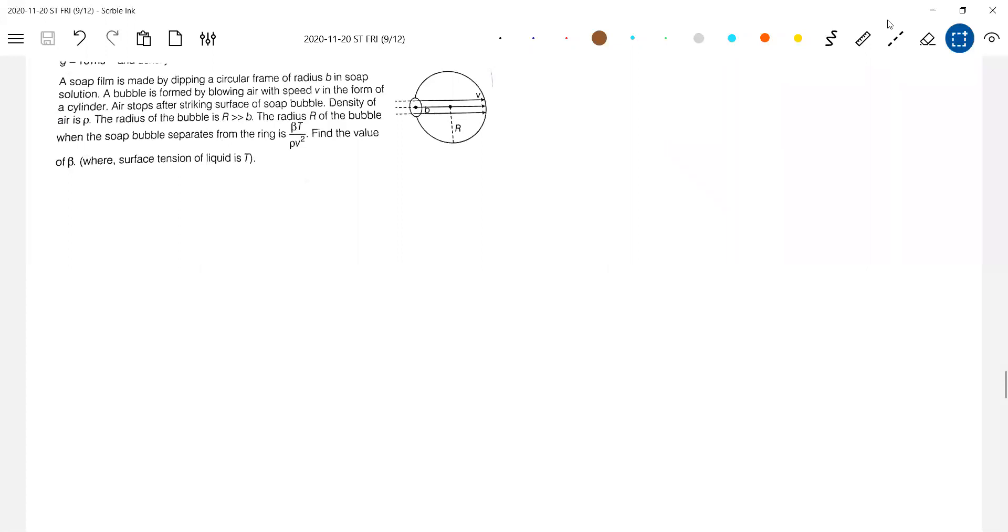But if you see some students, even if you go for any container, soap solution will be there, one ring will be there. You can hold it. So what you are going to do, you are going to dip that. When you dip and take it out, you'll get a soap film here. Then when you start blowing it, what happens?